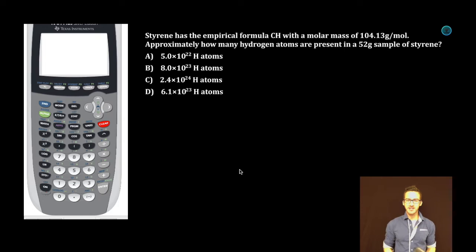Multiple choice, no calculator. Styrene has the empirical formula CH with a molar mass of 104.13 grams per mole. Approximately how many hydrogen atoms are present in a 52 gram sample of styrene? Tricky question.